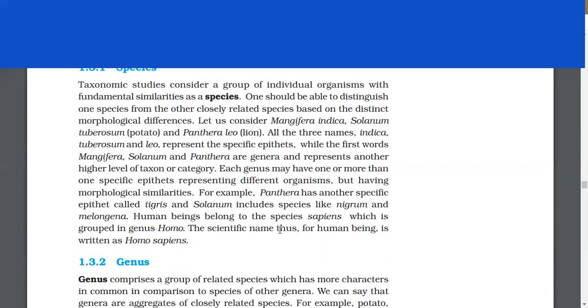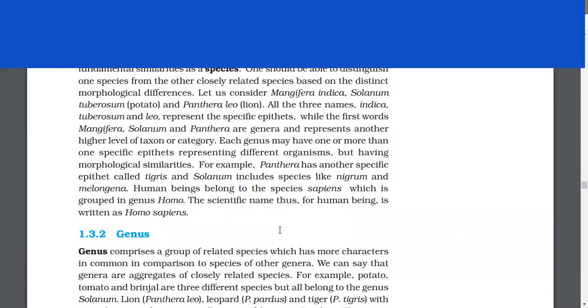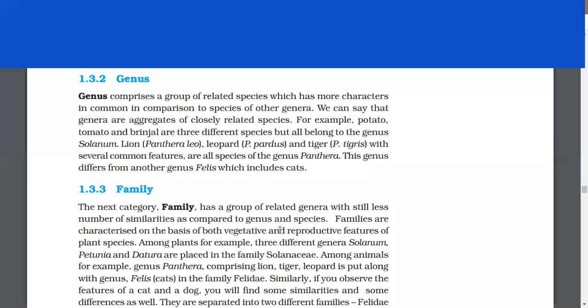While the first words - Mangifera, Solanum, and Panthera - are genera and represent another higher level of taxon or category. Each genus may have one or more than one specific epithet representing different organisms but having morphological similarities. For example, Panthera has another specific epithet called tigris, and Solanum includes species like nigrum and melongena. Human beings belong to the species sapiens, which is grouped in genus Homo. The scientific name for human being is written as Homo sapiens.